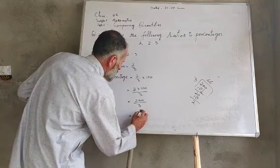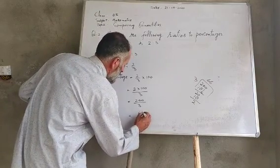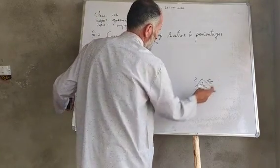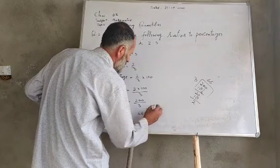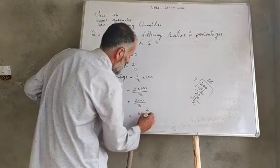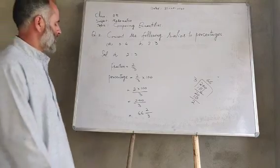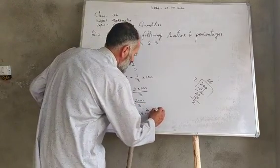This equals 66⅔%. The coefficient is 66, the remainder is 2 over the divisor 3. And that's our answer.